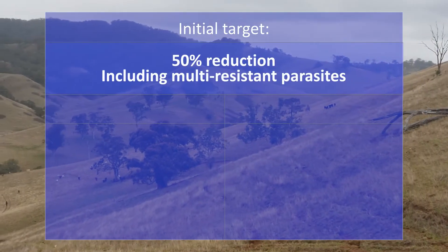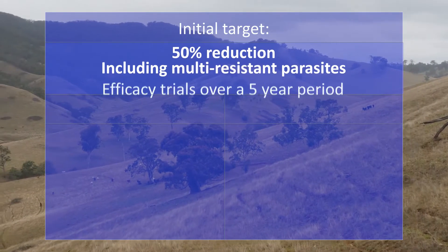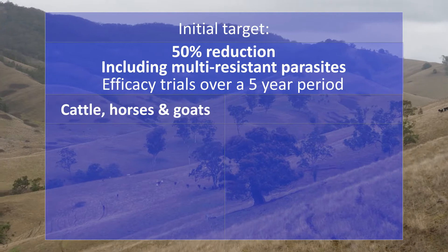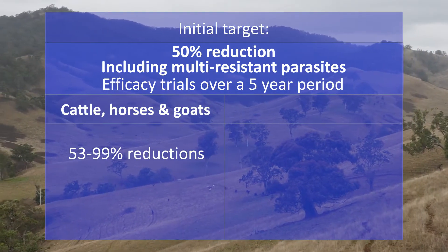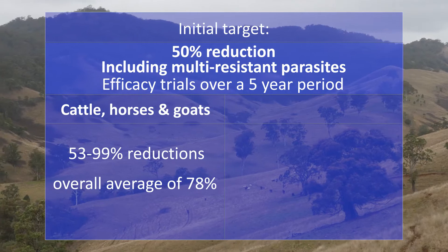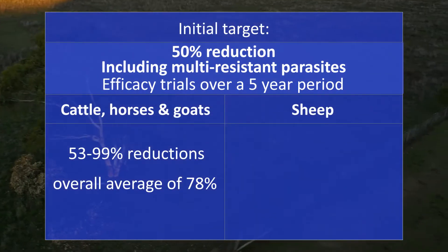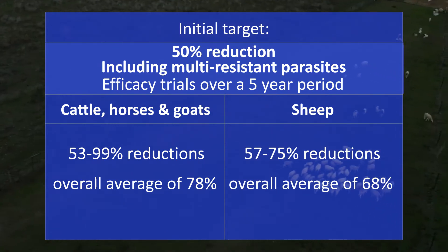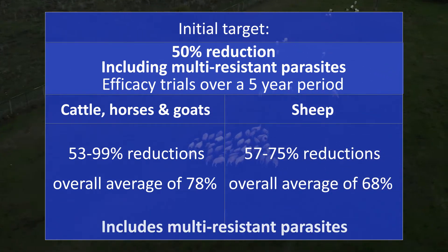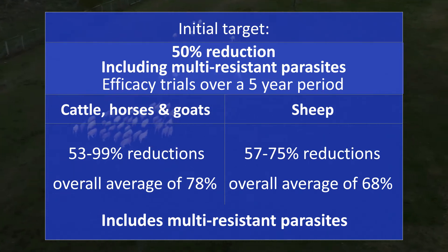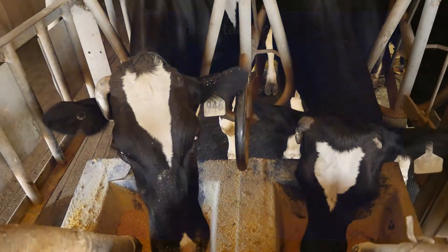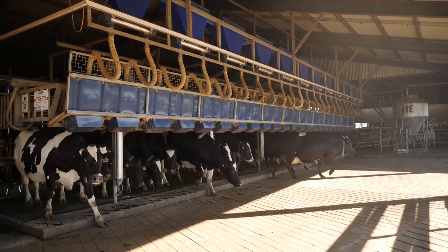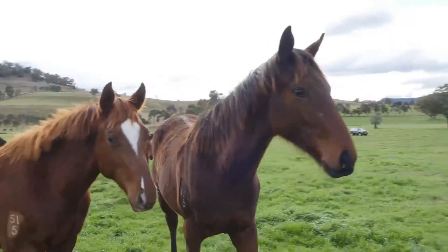The initial target had been a 50% reduction on infected pasture. Efficacy trials in cattle, horses and goats over a 5-year period showed reductions from 53% to 99% with an overall average of 78%. While in sheep, the reduction ranged from 57% to 75% with an overall reduction of 68%. These results include multi-resistant parasites. Safety studies were addressed with long-term feeding tolerance studies at up to 10 times the intended dose level in sheep, cattle and horses.